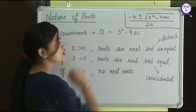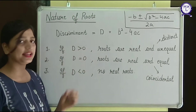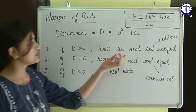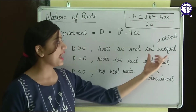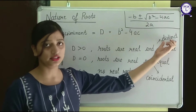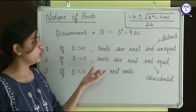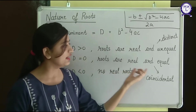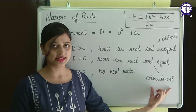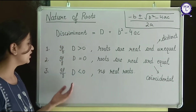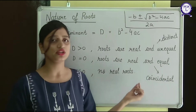The rules are: first of all, if D is greater than 0, roots are real and unequal. Second, if D equals 0, the roots are real and equal — sometimes called coincidental. And the third is, if D is less than 0, there will be no real roots.